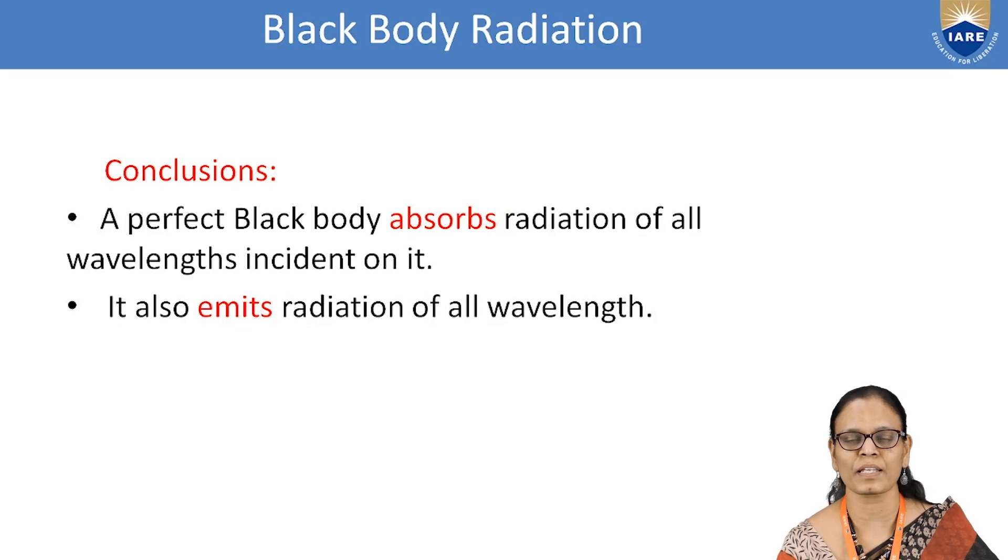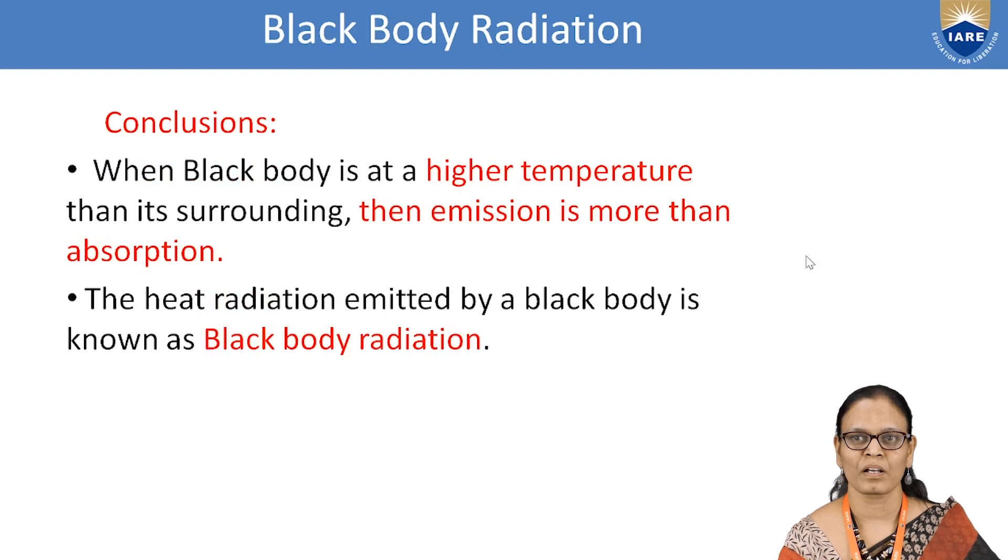The conclusions that can be drawn from this experiment are a black body acts as a perfect absorber and also as a perfect emitter. It absorbs radiations of all wavelengths incident on it and it also emits radiations of all wavelengths. When a black body is at a higher temperature than its surroundings, the emission is more than the absorption and this heat radiation that is emitted by the black body is called as black body radiation.